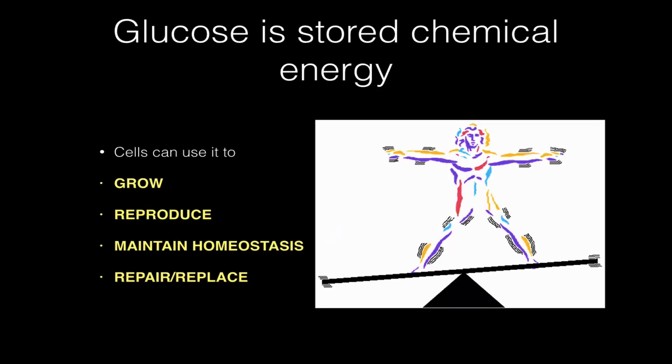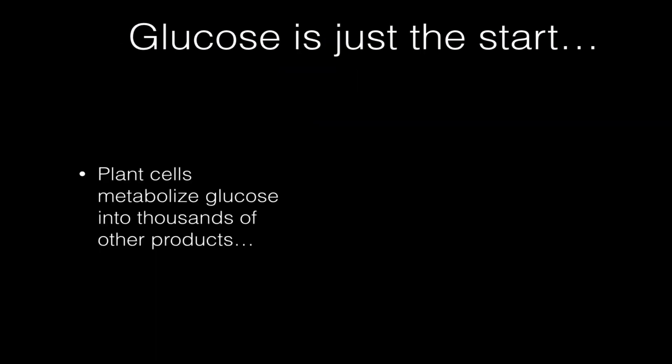Okay, now glucose is an energy storage molecule that cells use to grow, to reproduce, to maintain their balance, and to repair and replace body parts. Plants can make it, and we can't make it, so that means we are fundamentally different from plants.